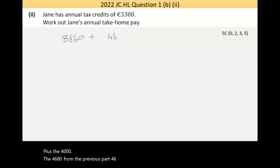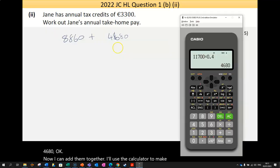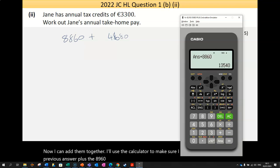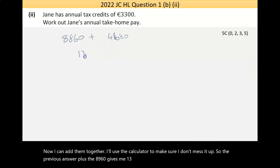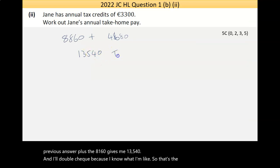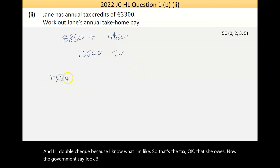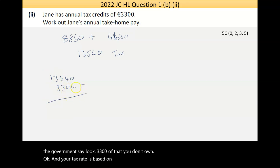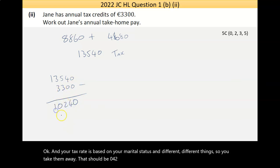So 4,680. Now I can add them together. I'll use the calculator to make sure I don't mess it up. So the previous answer plus the 8,860 gives me 13,540. I'm going to double-check that. So that's the tax that she owes. Now the government say look, 3,300 of that you don't owe. Your tax credit is based on your marital status and different things. So if we take them away, that should be 10,240. So she owes 10,240 euros in tax.